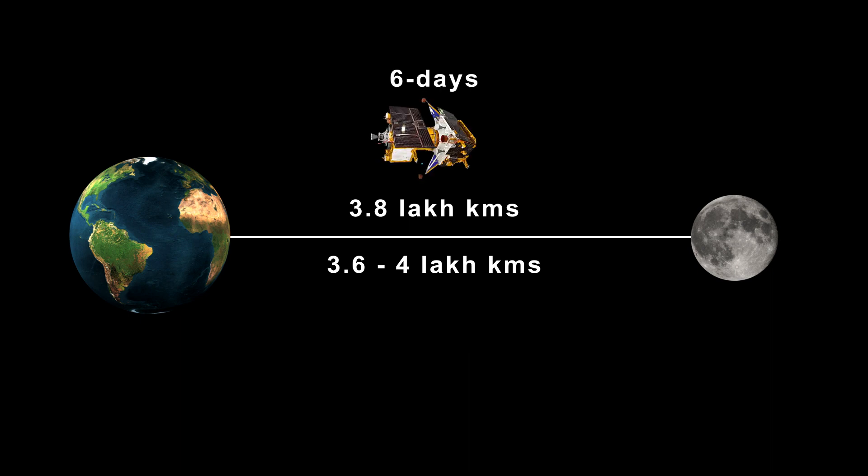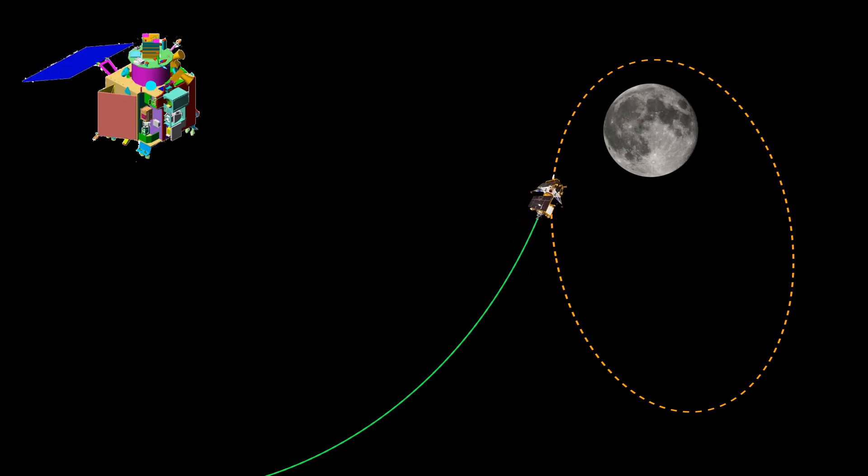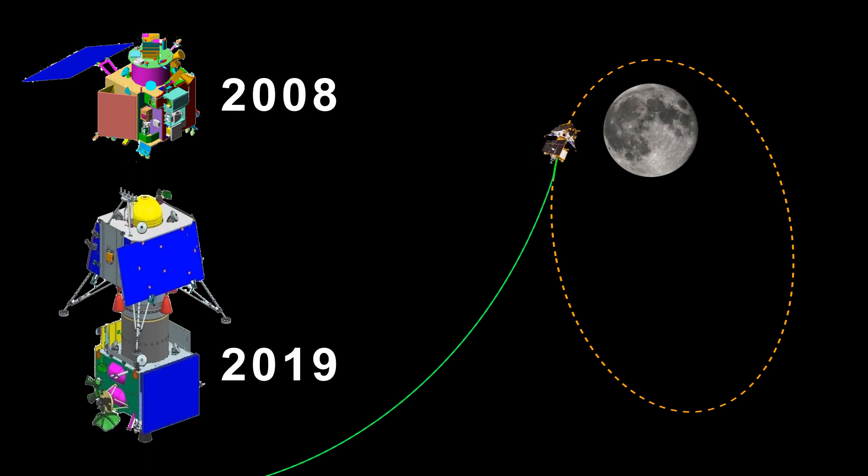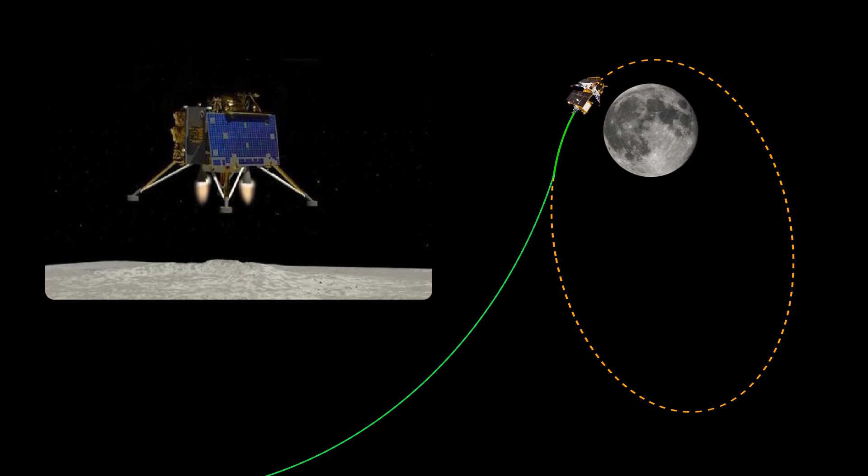It will take about 6 days for Chandrayaan-3 to cover this distance. Reaching the moon's orbit is only part of the mission. ISRO had already put Chandrayaan-1 in 2008 and Chandrayaan-2 in 2019 on the lunar orbit. But the crucial part is landing Chandrayaan-3 as it reaches the moon's surface.